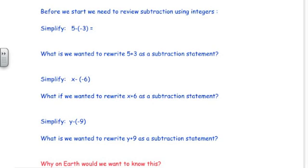If you're asked to simplify 5 subtract negative 3, you would write down 5 plus 3, because the rule for subtracting integers is to add the opposite. If we wanted to rewrite 5 plus 3 as a subtraction statement, the line above it would be 5 subtract negative 3. That's how we can write an addition statement as a subtraction of a negative number.